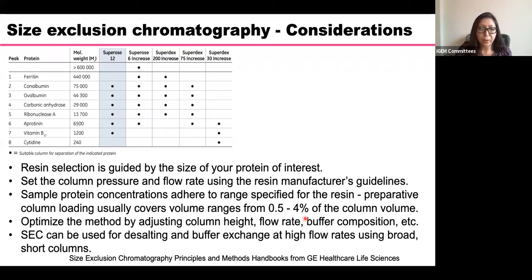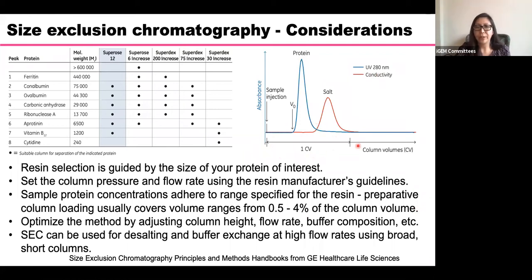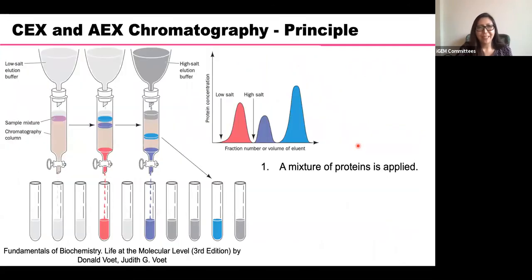Size exclusion chromatography can also be used for desalting or buffer exchange at high flow rates using broad, short columns. In this application, you measure conductivity to track the salt and use UV signal to track your protein. Within one column volume, you get your protein desalted — a very useful feature.